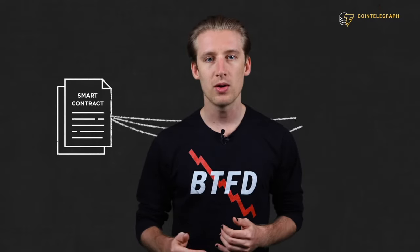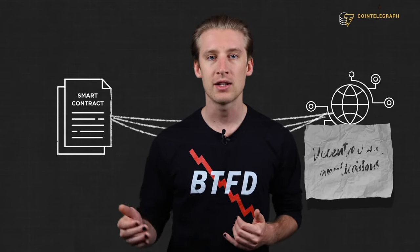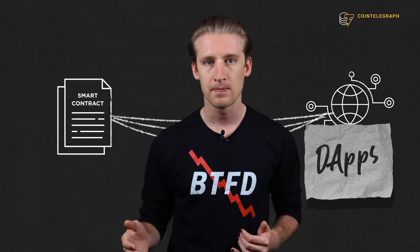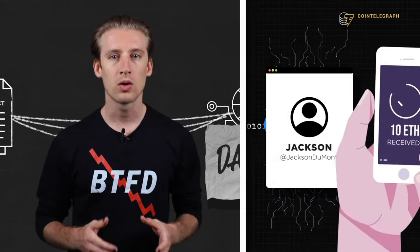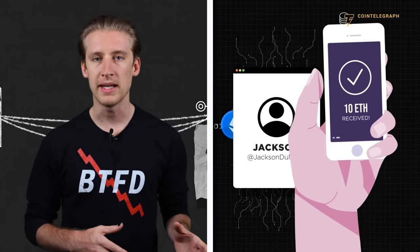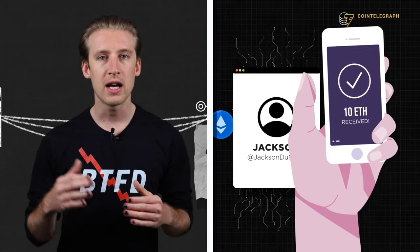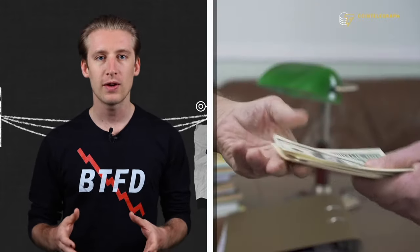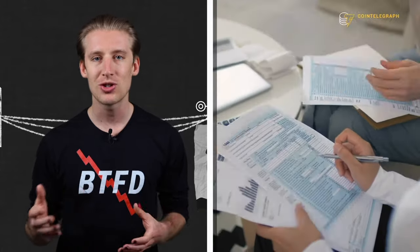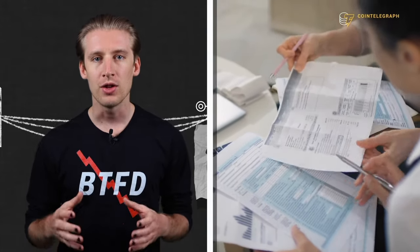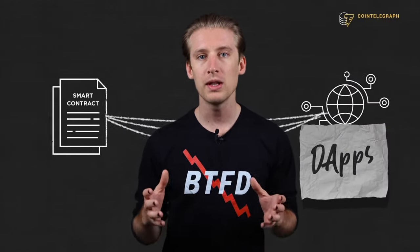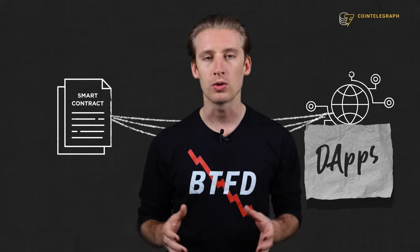Customizable. Smart contracts can be coded in many different ways to create decentralized applications, or dApps. The examples we looked at earlier were only the most basic. There are now dApps for investing, gaming, voting, crowdfunding, payments, insurance, and much more. The use of smart contracts are only limited by our own creativity.